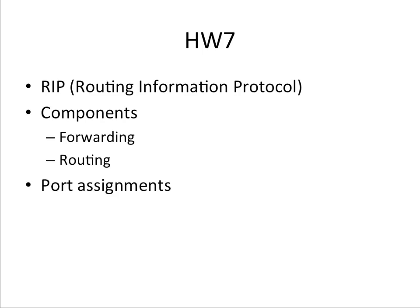Let's spend a few minutes talking about homework 7. The goal is to build a routing protocol and a forwarding engine. A router has two components: forwarding and routing. We're going to do both in homework 7 and 8. Homework 7 mostly concerns forwarding, and in homework 8 we actually compute the routes. We talked about port assignments last week — you can go look at the last lecture video for what ports you're supposed to use.